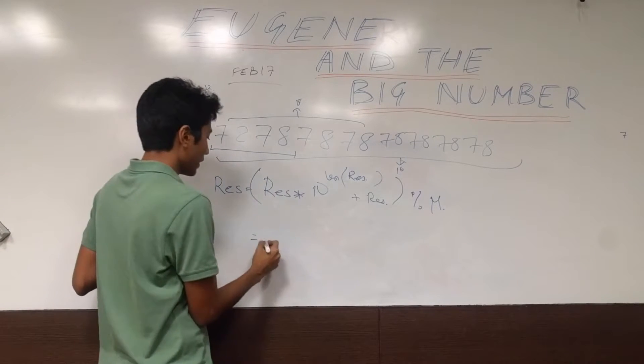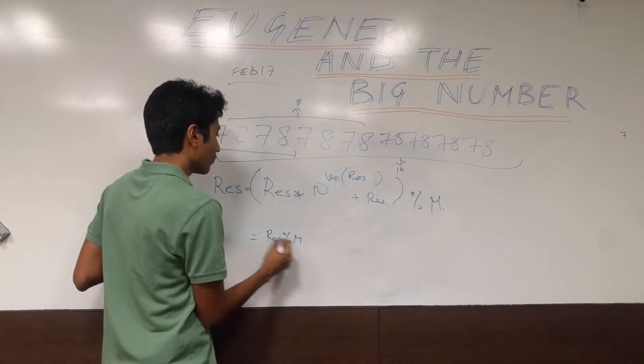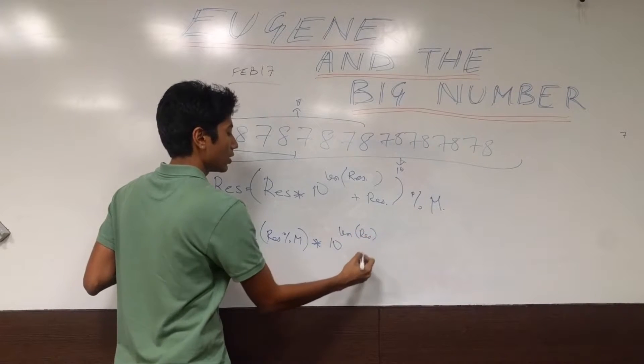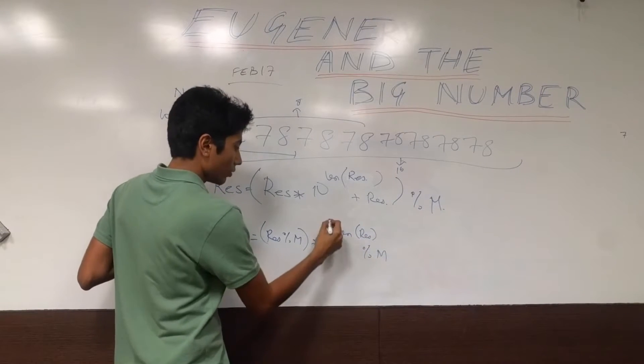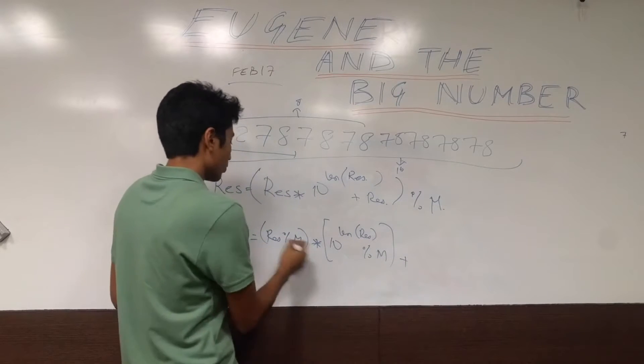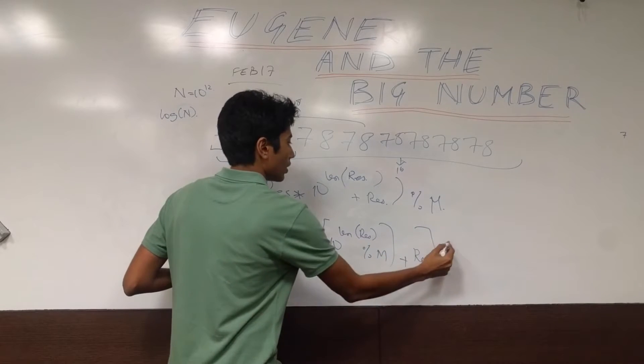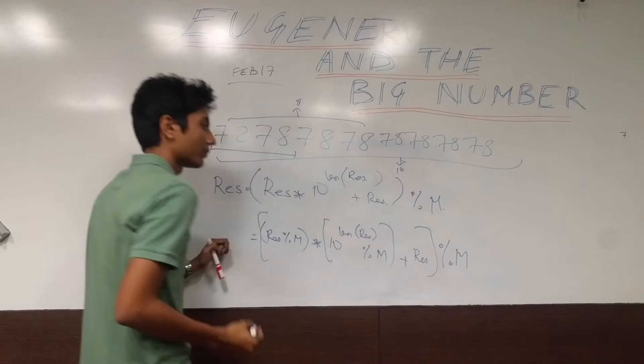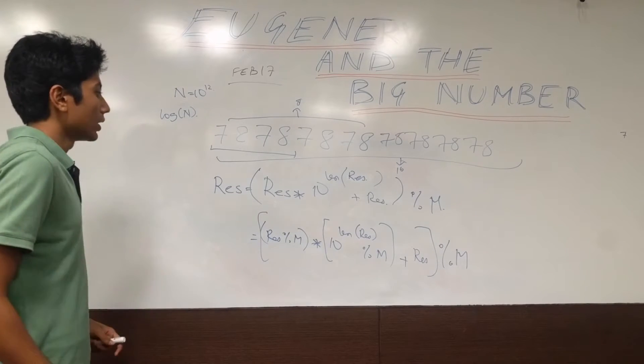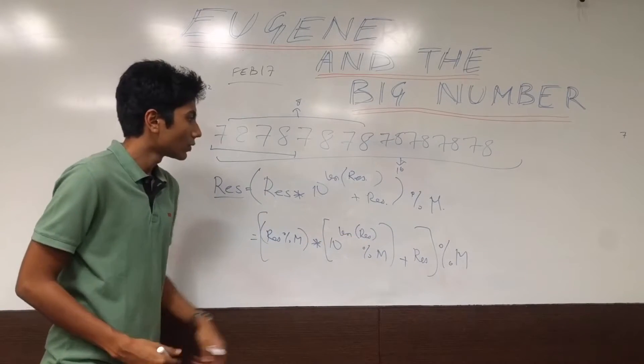Now, instead of doing this dumb calculation, what we can do is mod m with everything else. So result can be mod with m, then multiplied by 10 into length of result modulo m. We can mod the entire thing with m. And so your result will keep on changing till you realize that length of result is sufficiently large.